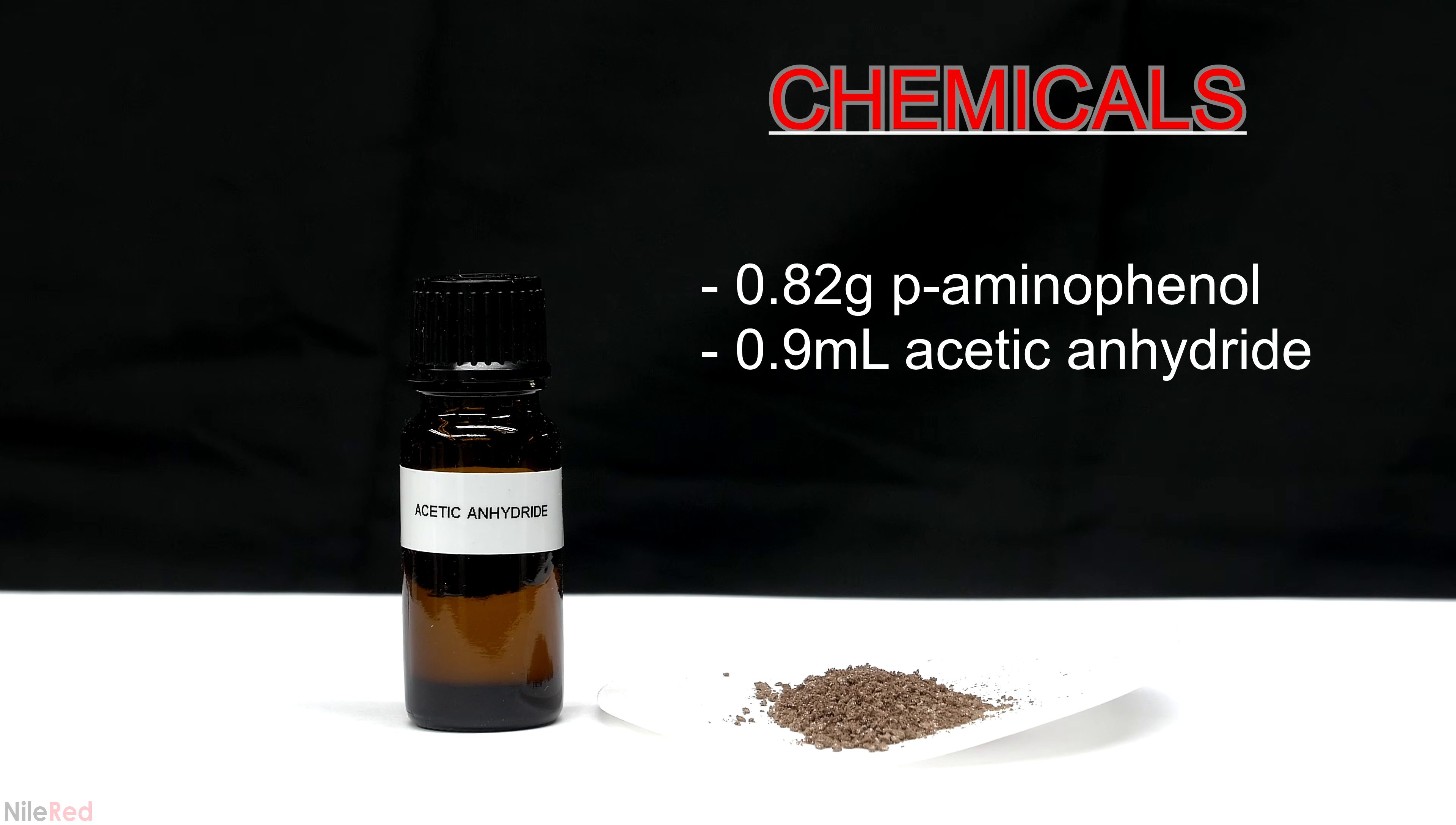Acetic anhydride is commonly used to make illegal drugs, so its sale is pretty heavily controlled. At least in North America, you can get a small amount from eBay, but it comes at a hefty price. The procedure I'm using was found online, and I'll provide a link in the description.